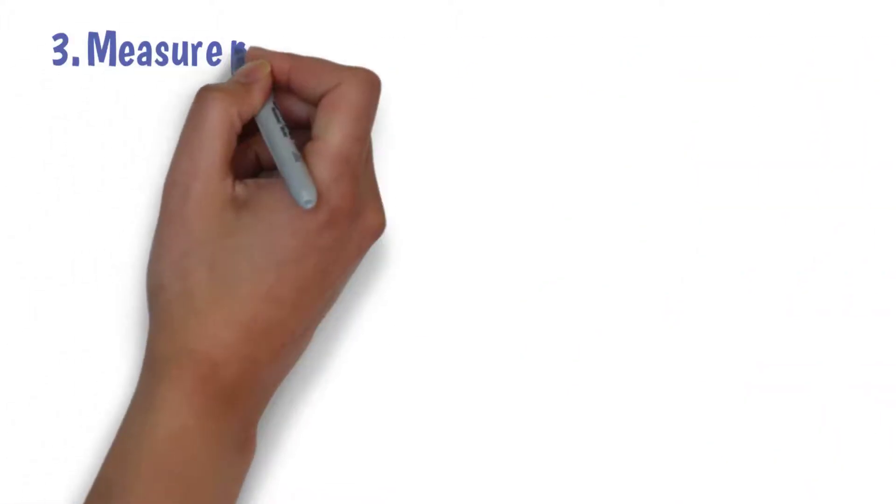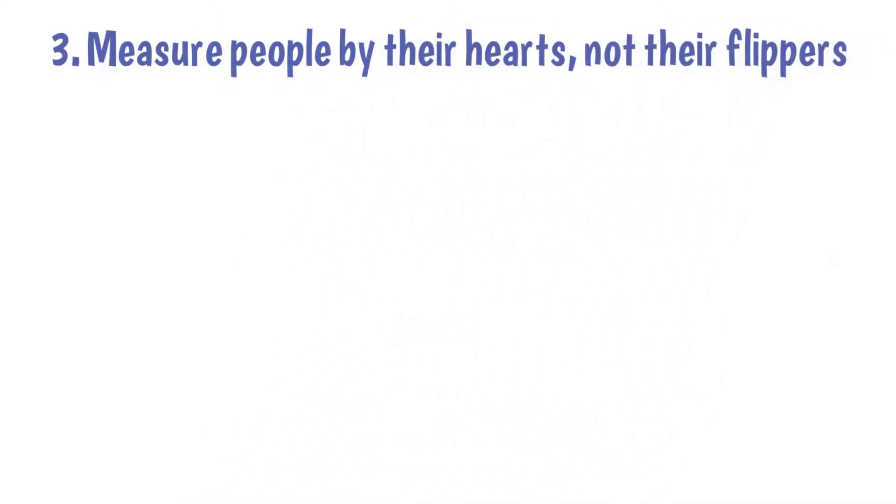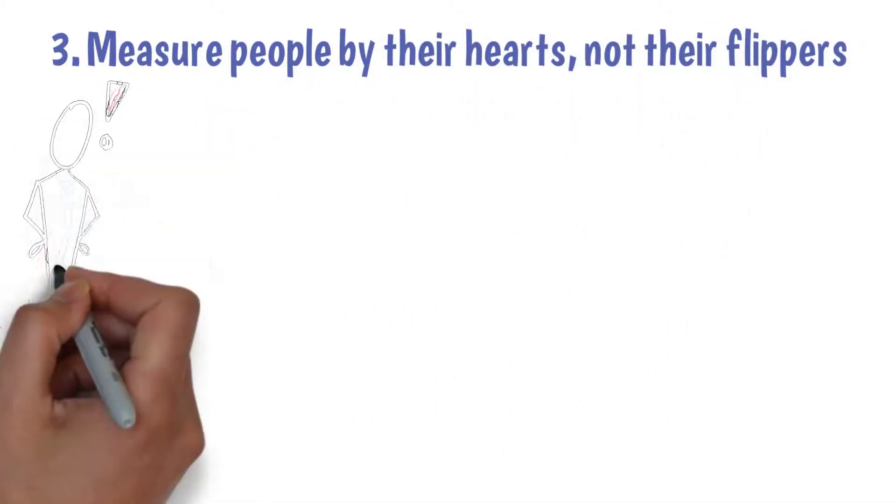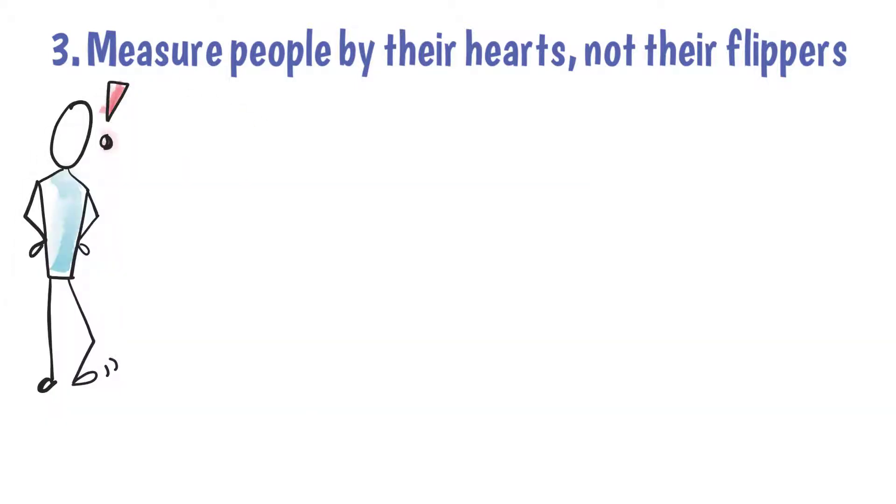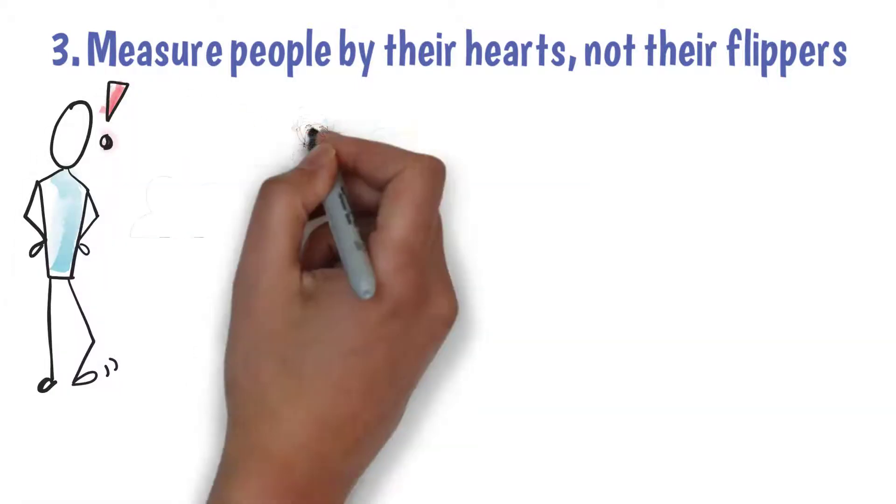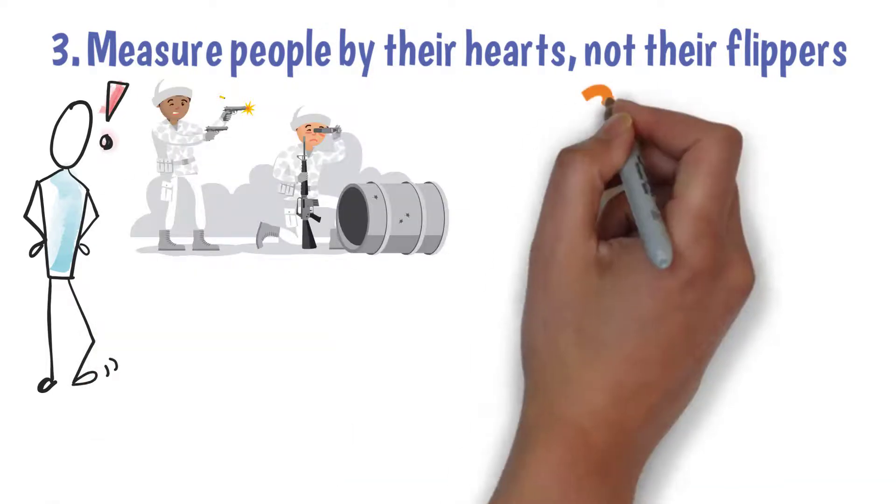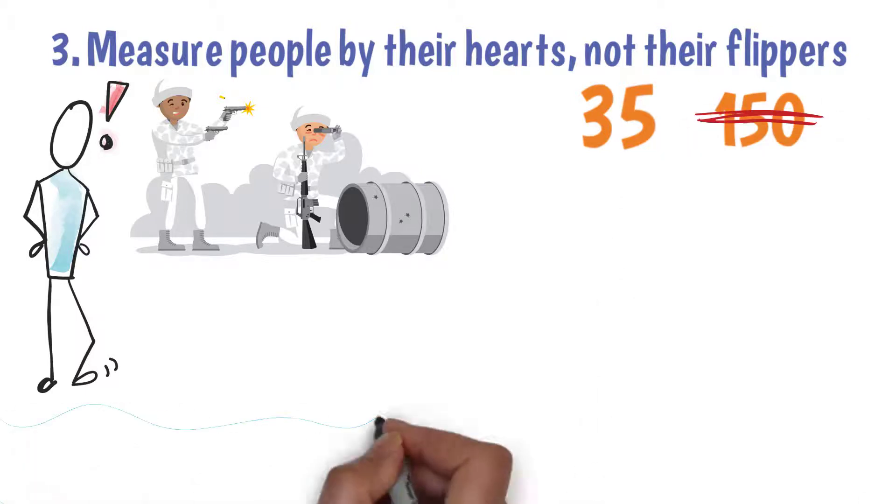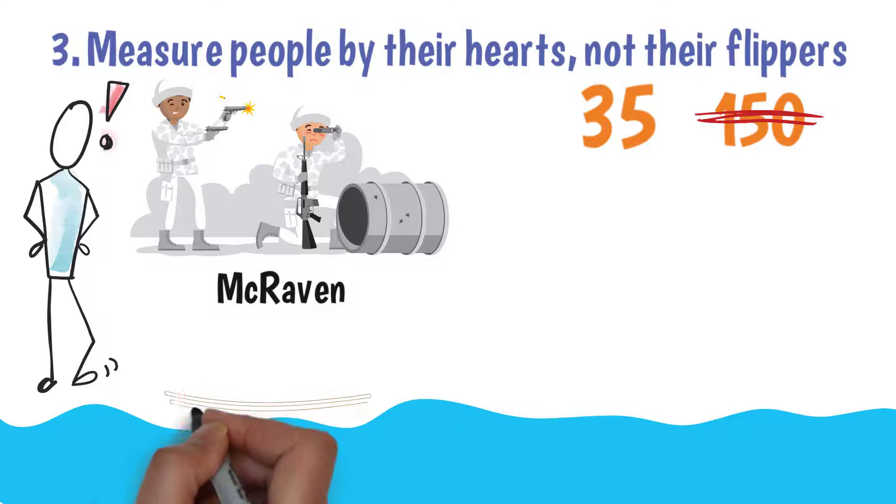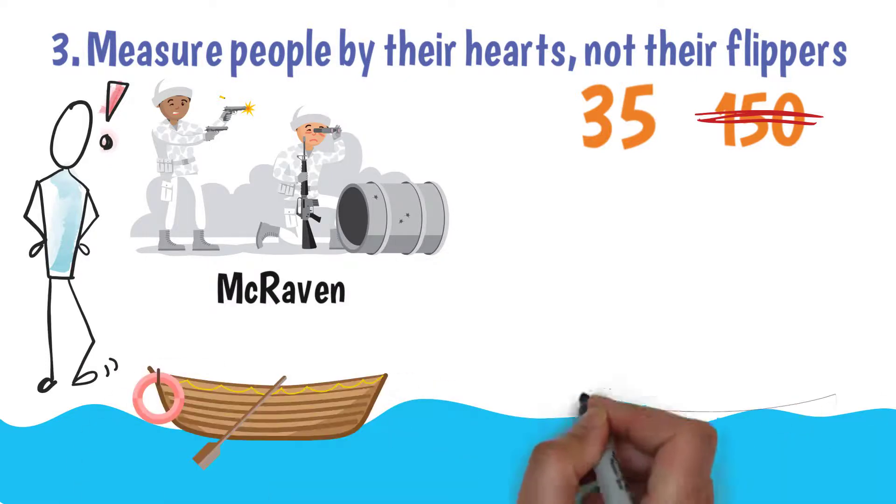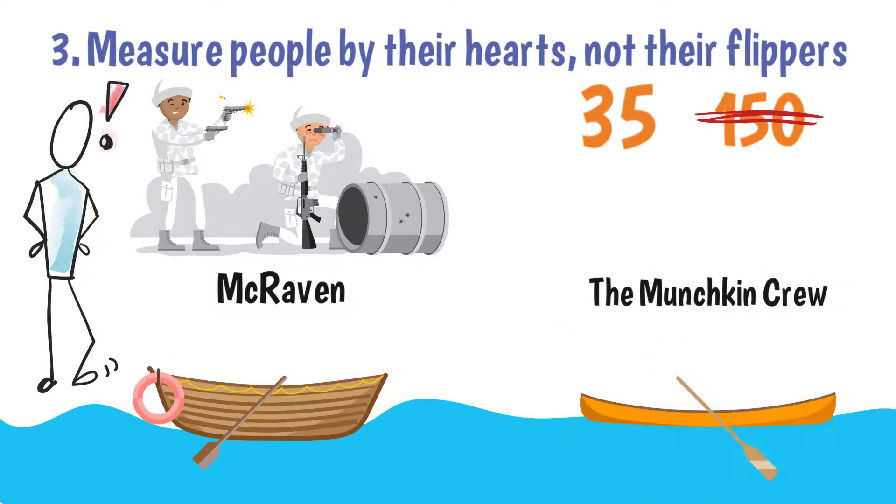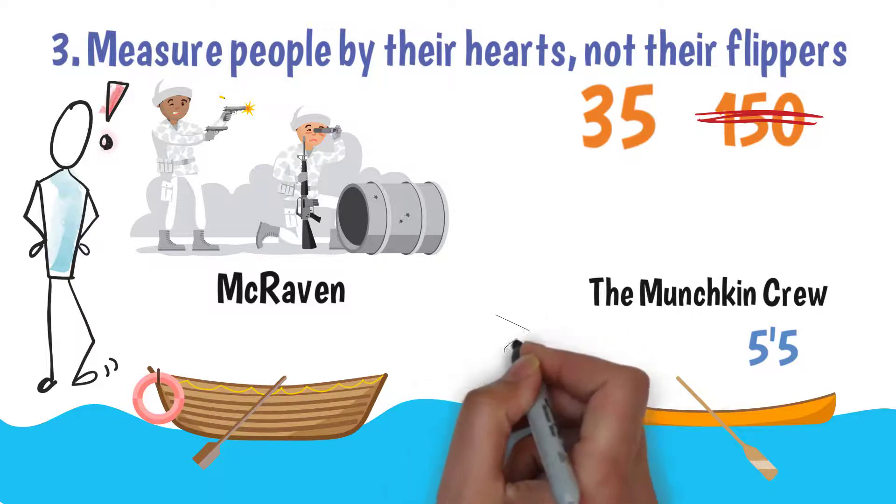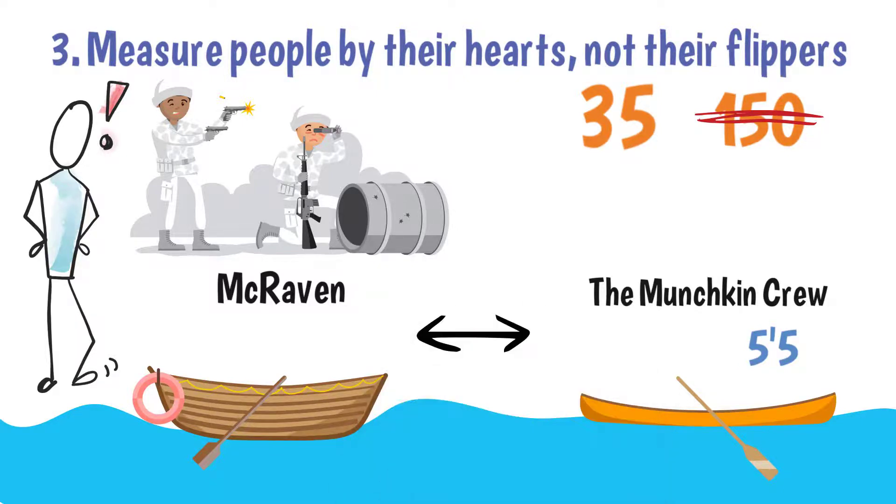Measure people by their hearts, not their flippers. This might sound funny, but it is quite important to take note of. Appearances can be deceitful. After a few weeks of the grueling Navy SEAL training, there are only 35 out of the 150 contestants left. There were now six boat crews, and McRaven was in a boat with the tall guys. There was another boat crew, the Munchkin crew, which only had short guys in it. No one was taller than five foot five, and they were all from various racial and cultural backgrounds. The Munchkin crew's little flippers were often a source of amusement for the taller guys.